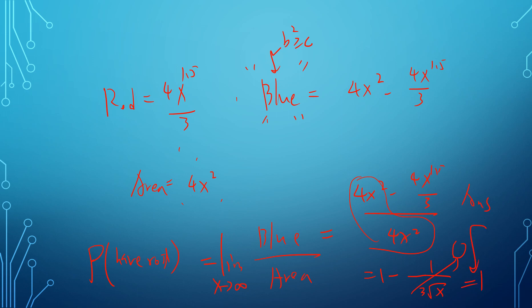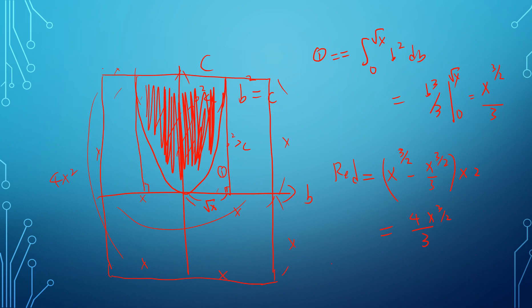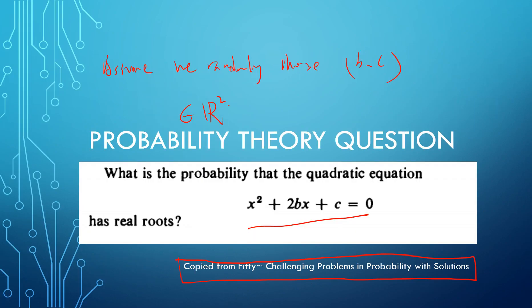So the probability is 1 — meaning if you randomly choose any b and c, almost all the time the quadratic will have real roots. The probability of getting complex roots is 0, but you can still pick specific b and c values that yield complex roots; this is what's called a set of measure zero. I hope you found this interesting — subscribe to my channel and I'll see you in the next video.